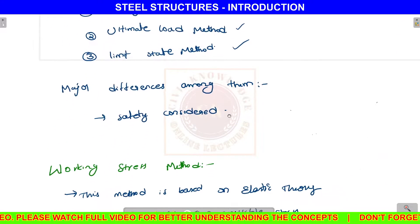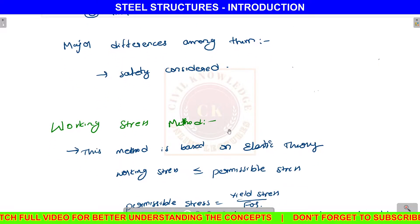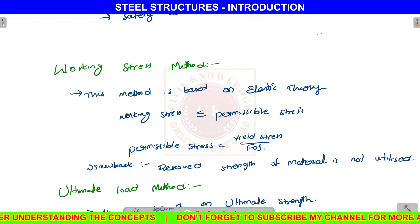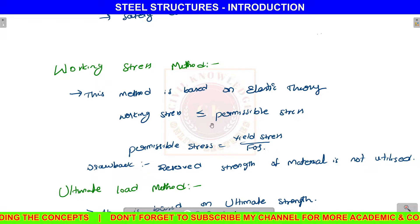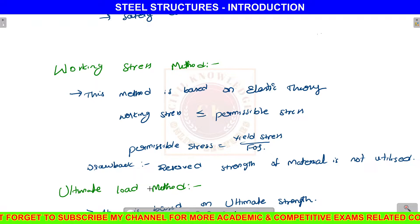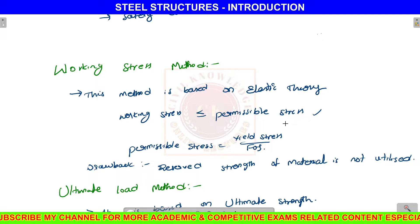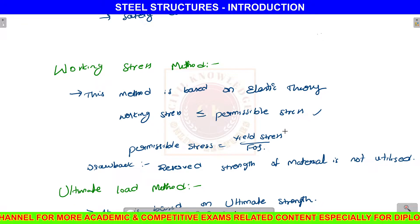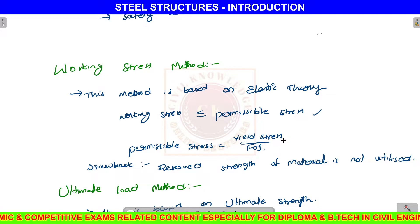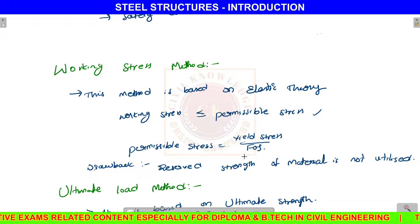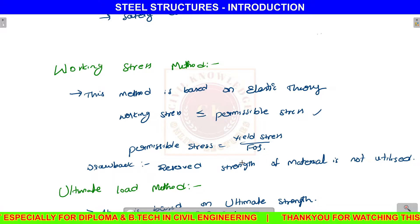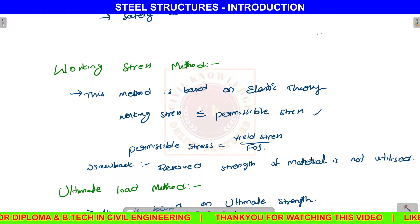That factor of safety is one major difference. Coming to the working stress method: this method is based on the elastic theory and is used to evaluate external loads. Permissible stresses are less than yield stress. Permissible stress equals yield stress divided by factor of safety. The major drawback of the working stress method is that we cannot fully utilize the complete material strength, leading to an uneconomical design.